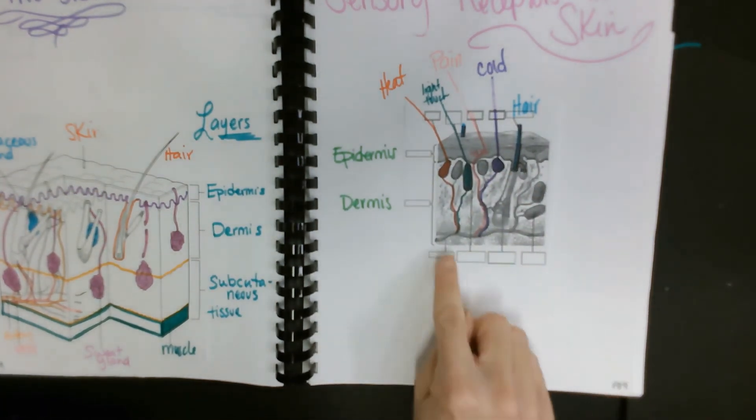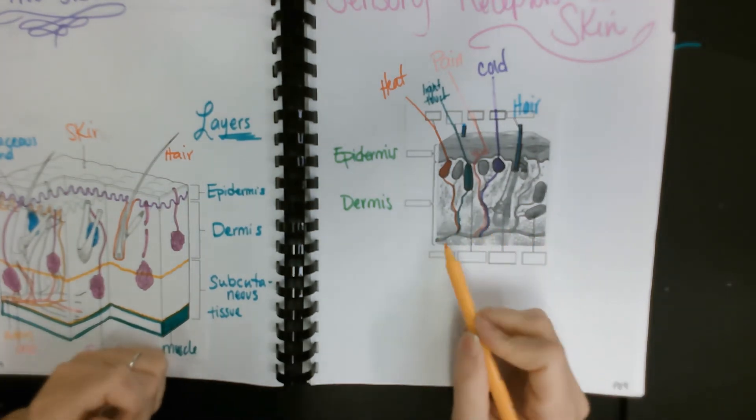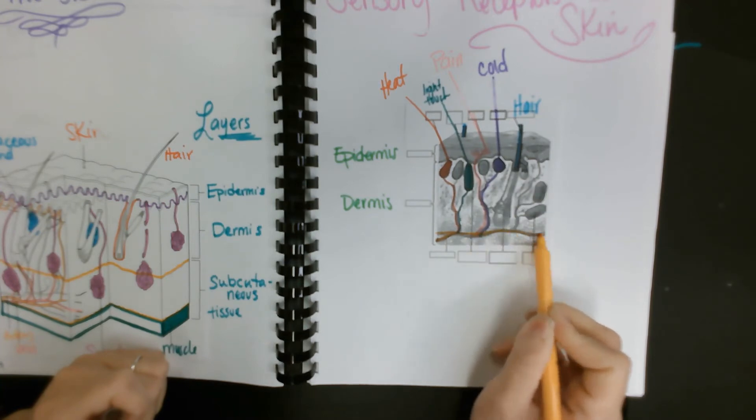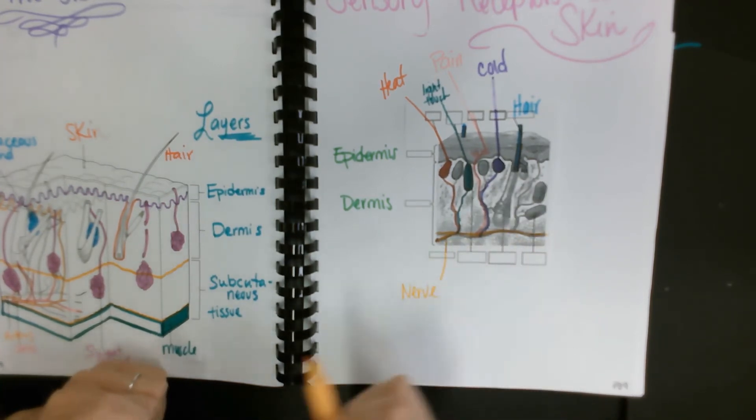Let's go to the bottom down here. Running across and running up individually to each receptor are your nerves. We're just going to color this across. These are all your nerves.